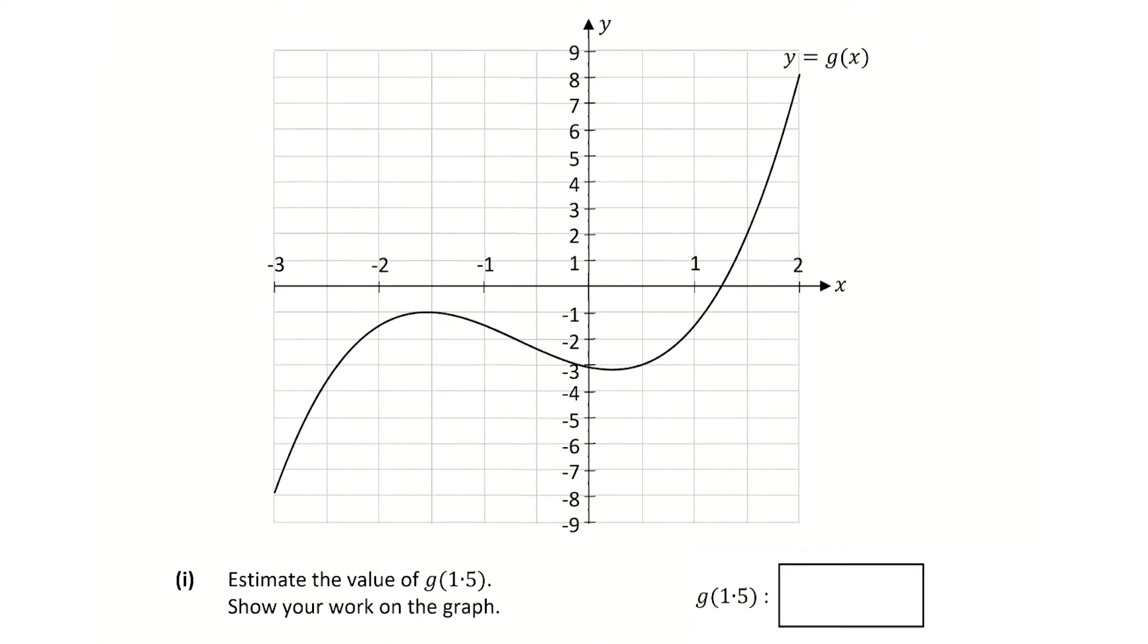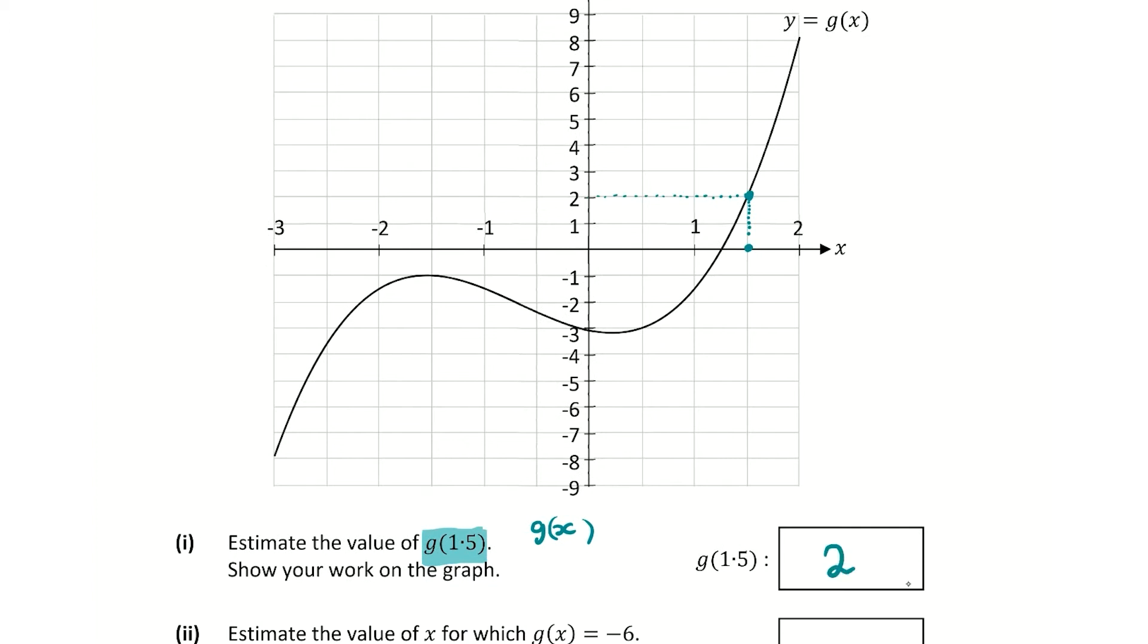Part 1 asks us to estimate the value of g(1.5). That means x equals 1.5, because the graph is g(x). Let's have a look at when x is 1.5. You can take your ruler here and draw a line or a dotted line up to where it hits the graph, and then go right across until it hits the y-axis, and that is 2. So the answer is 2.